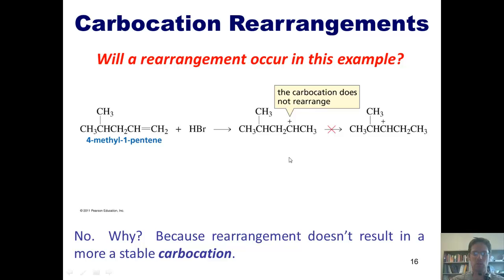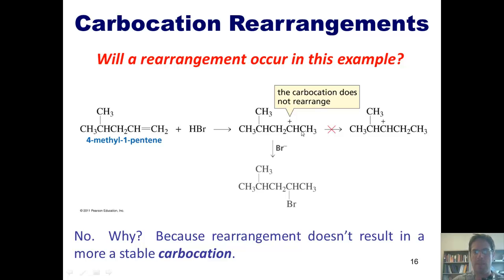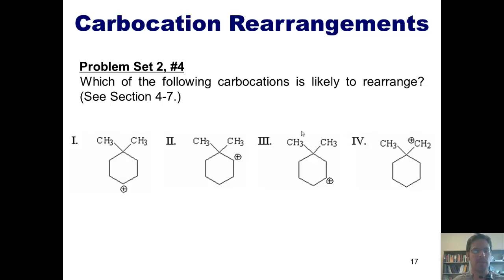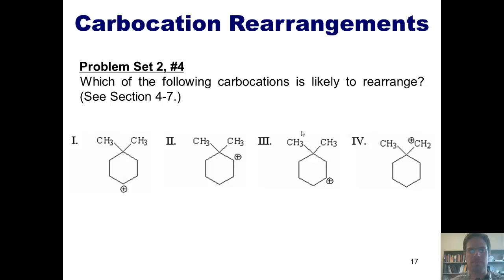Thus, 1,2-hydride shifts or 1,2-methyl shifts do not occur if doing so doesn't improve the stability of the carbocation. As a result, the major product of this reaction will occur with the bromide coming in and plugging this hole, forming a bond with that carbon and giving me this product.